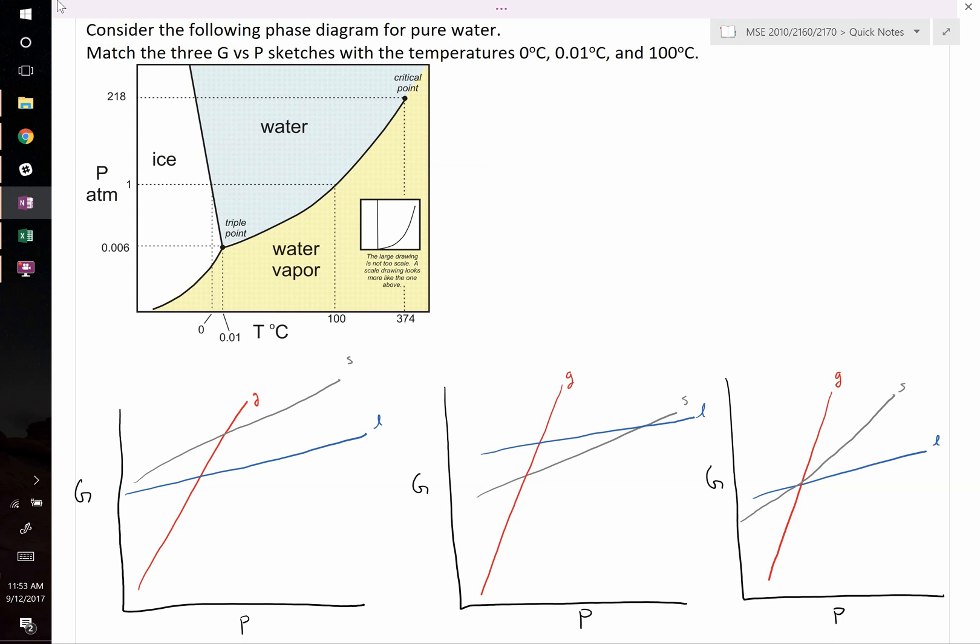Okay, this question says consider the following phase diagram for pure water. It then says match the three G versus P sketches with the temperatures 0, 0.01, and 100 degrees Celsius. So which one of these sketches corresponds to which of those temperatures?